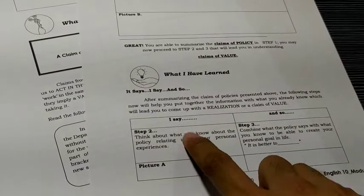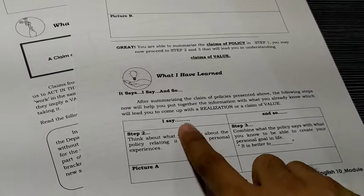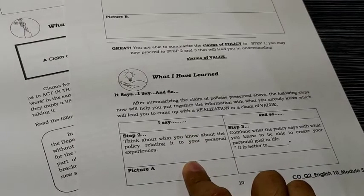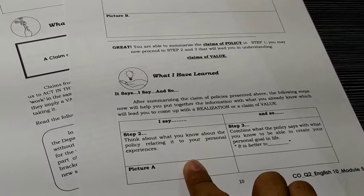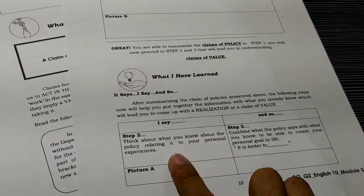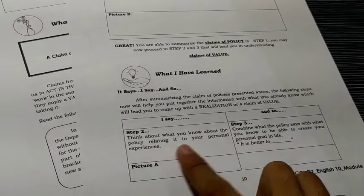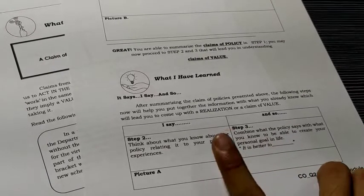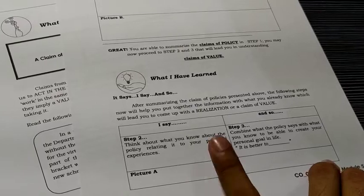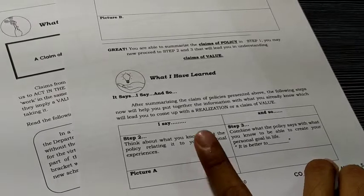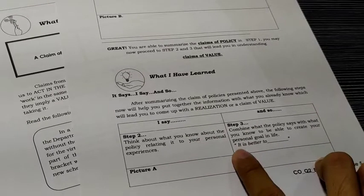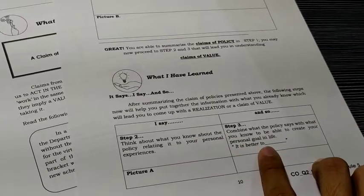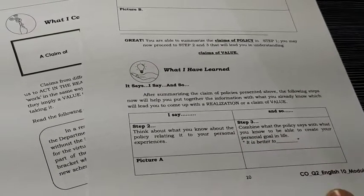In the first column, 'I say': what can you say about picture A and picture B, based on or connecting to your personal experiences? In the second column, 'and so': what should be done after connecting your experiences to the picture? Start your statement with 'It is better to...' followed by your own idea.